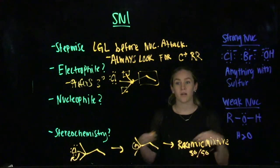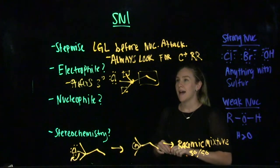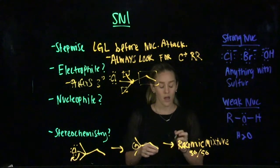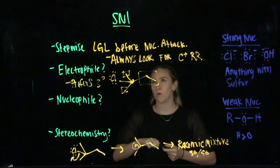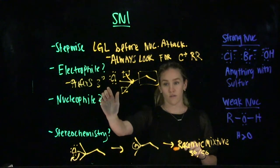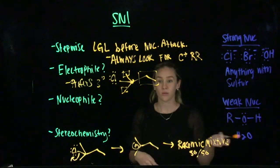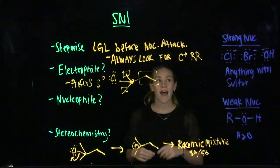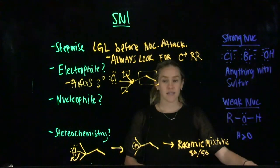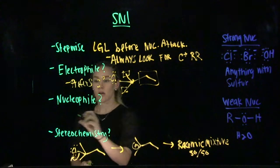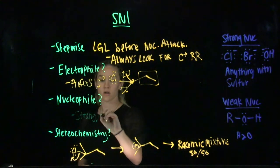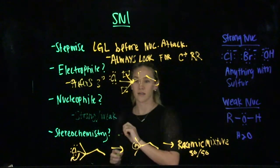Another big difference between SN1 and SN2 is that SN1 reactions don't necessarily have to have a strong nucleophile. A lot of the times, you know it is an SN1 reaction because it has that tertiary electrophile and it might have a weak nucleophile. SN2, however, has to have that strong nucleophile for the reaction to take place. So it can have strong or weak nucleophiles.